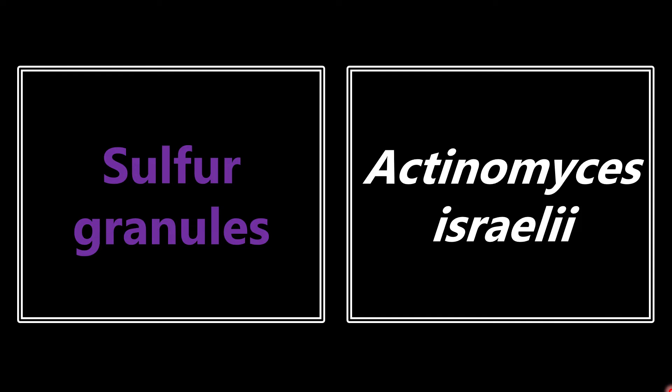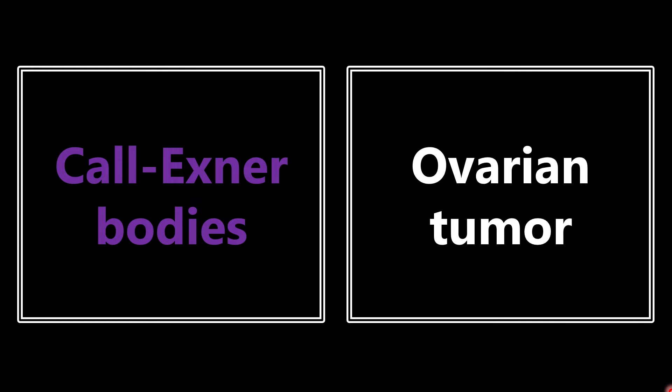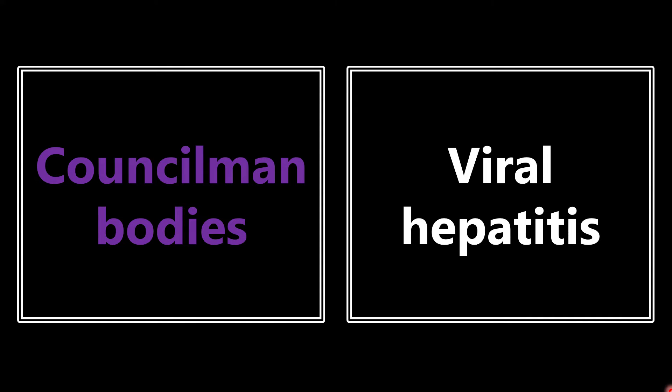If you see sulfur granules described on the exam, the microbe they want you to think about is Actinomyces israelii. Next, Call-Exner bodies — these aren't super common, so they may just give you that term, and the association is with an ovarian tumor. Similarly, Councilman bodies — if you see that on the exam, think viral hepatitis; it can also be seen with yellow fever, but the main association is viral hepatitis.